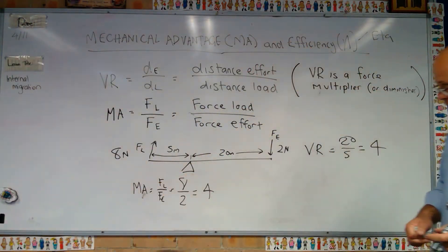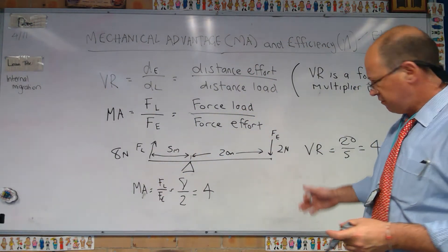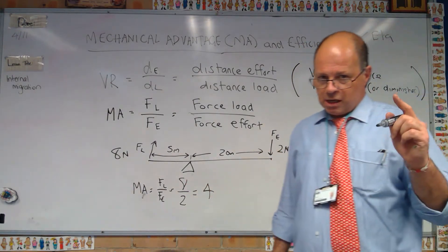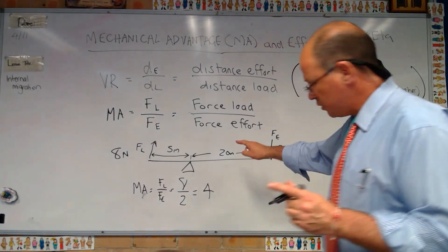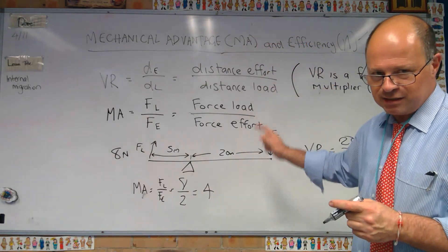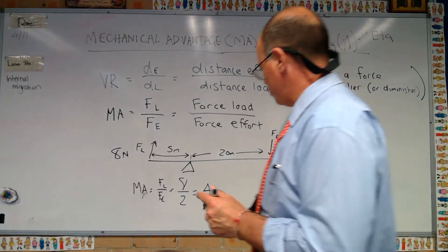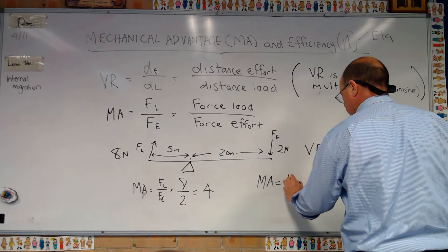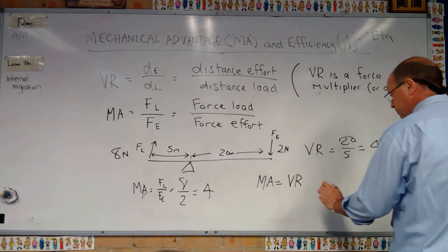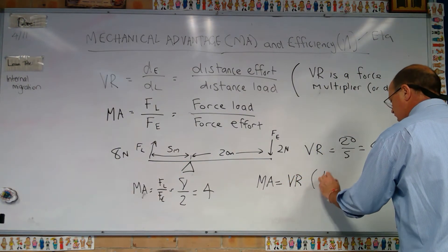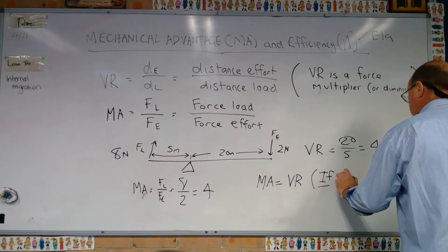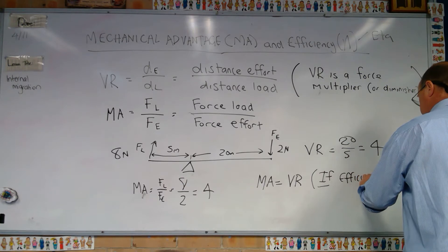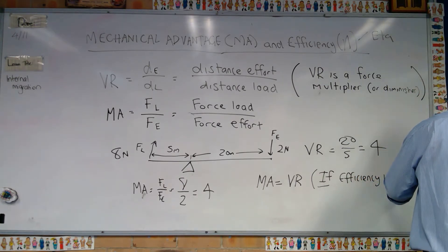We might say, if MA and VR are equal, they're interchangeable — the same thing. And they are, but only in this very special case where our efficiency is 100%. So the first thing to remember is: MA equals VR only if efficiency is 100%.